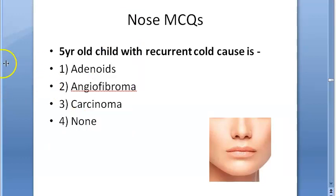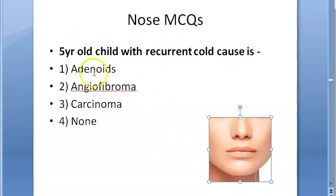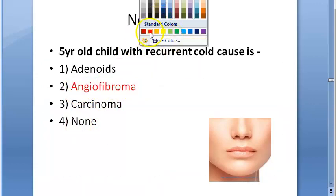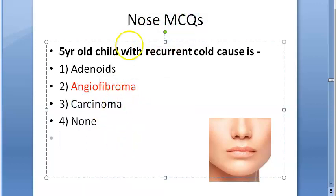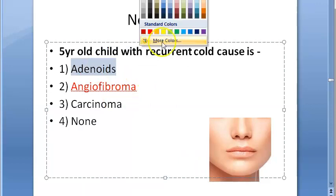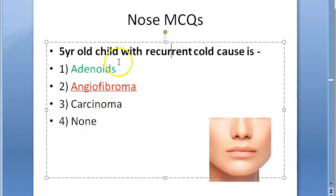A five-year-old child with recurrent cold — why? Options are adenoids, angiofibroma, and carcinoma. We can eliminate angiofibroma since they didn't even say it's a boy, and carcinoma is too generic. The answer is adenoids. You have studied adenoid tonsils and adenoid facies — recurrent cold in a child points to adenoids.